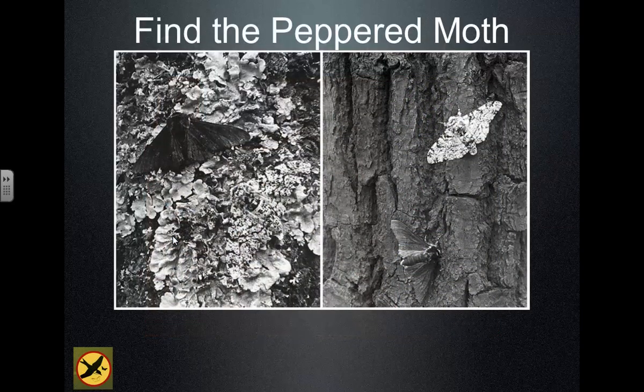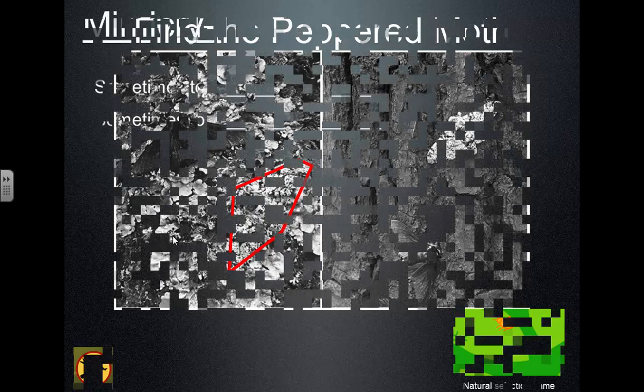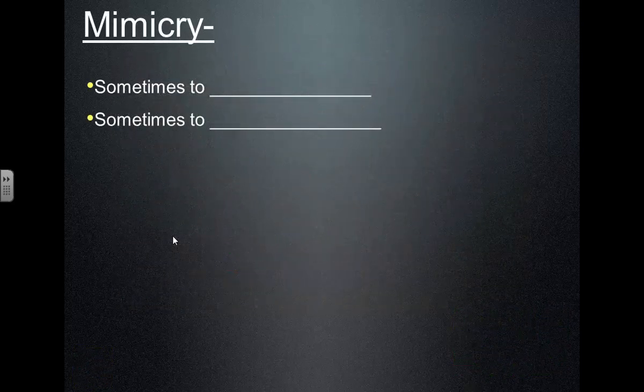Here's another view of the peppered moth. On the light background before the Industrial Revolution, you can hardly see the light-colored moth that blends in, but you can easily see the dark one. After the trees became darker, the light one stands out more and is more likely to be eaten.